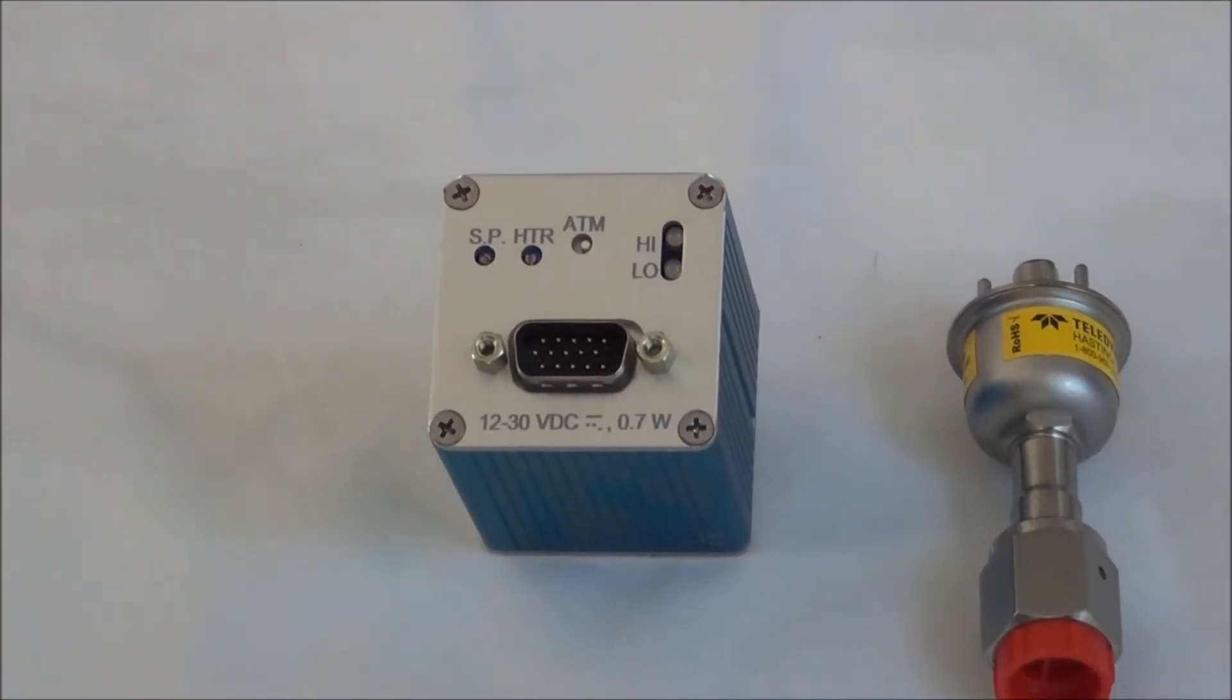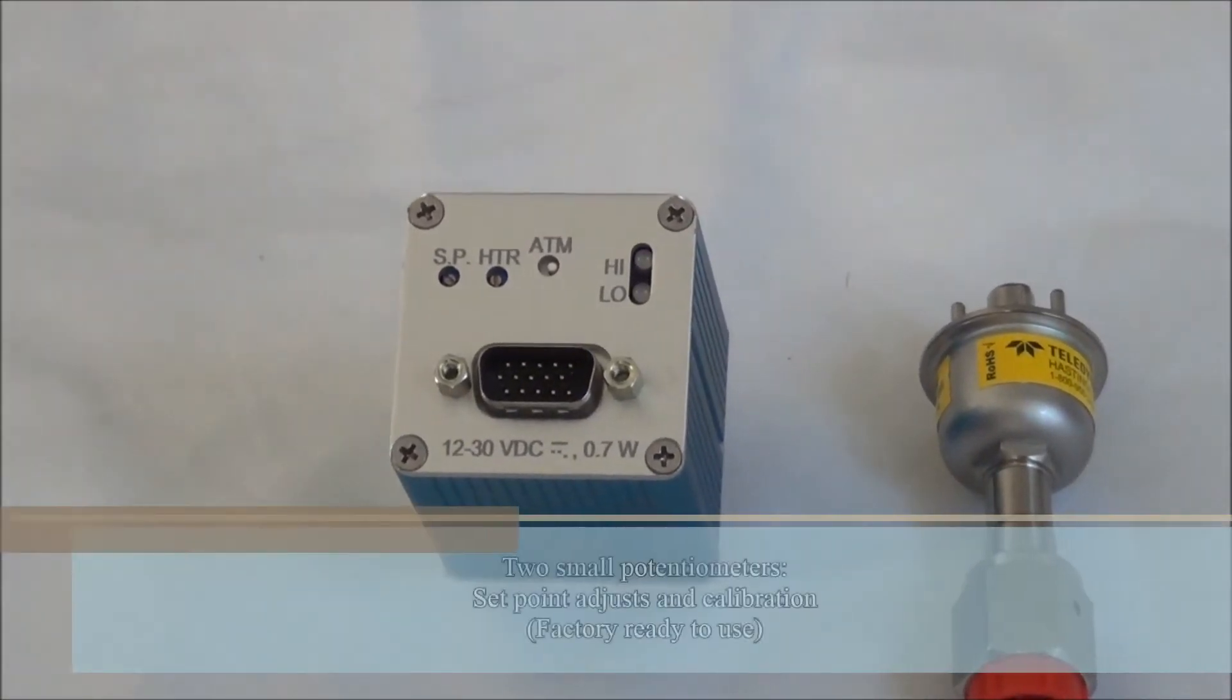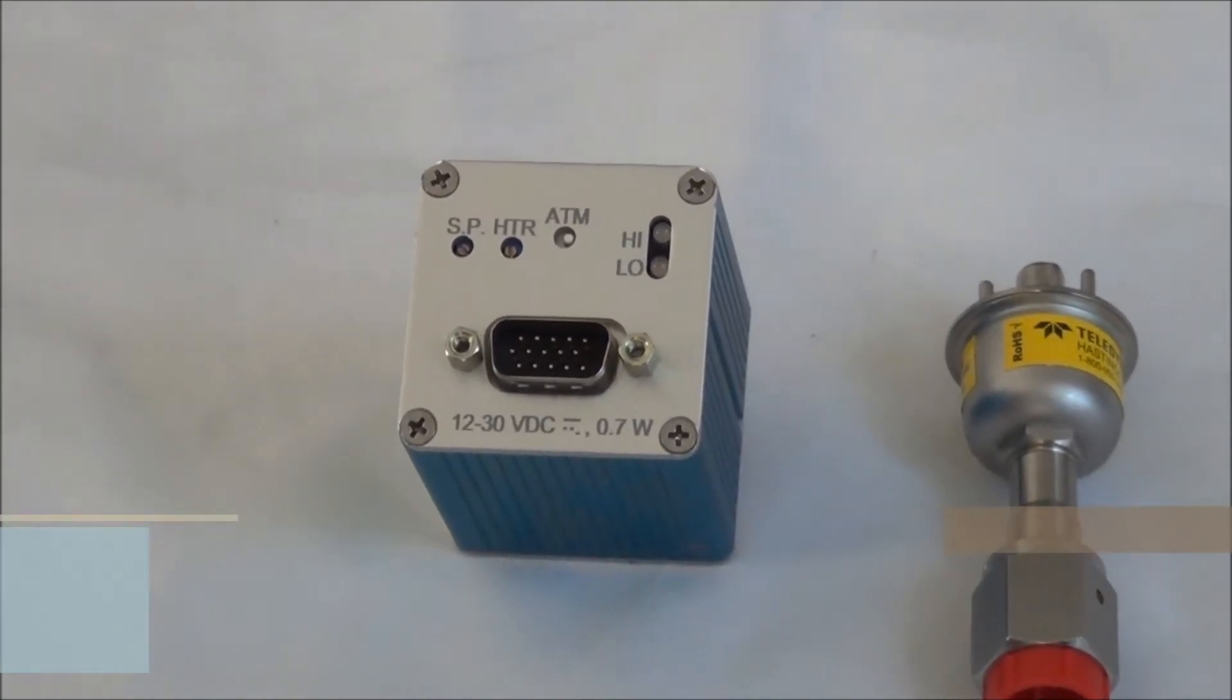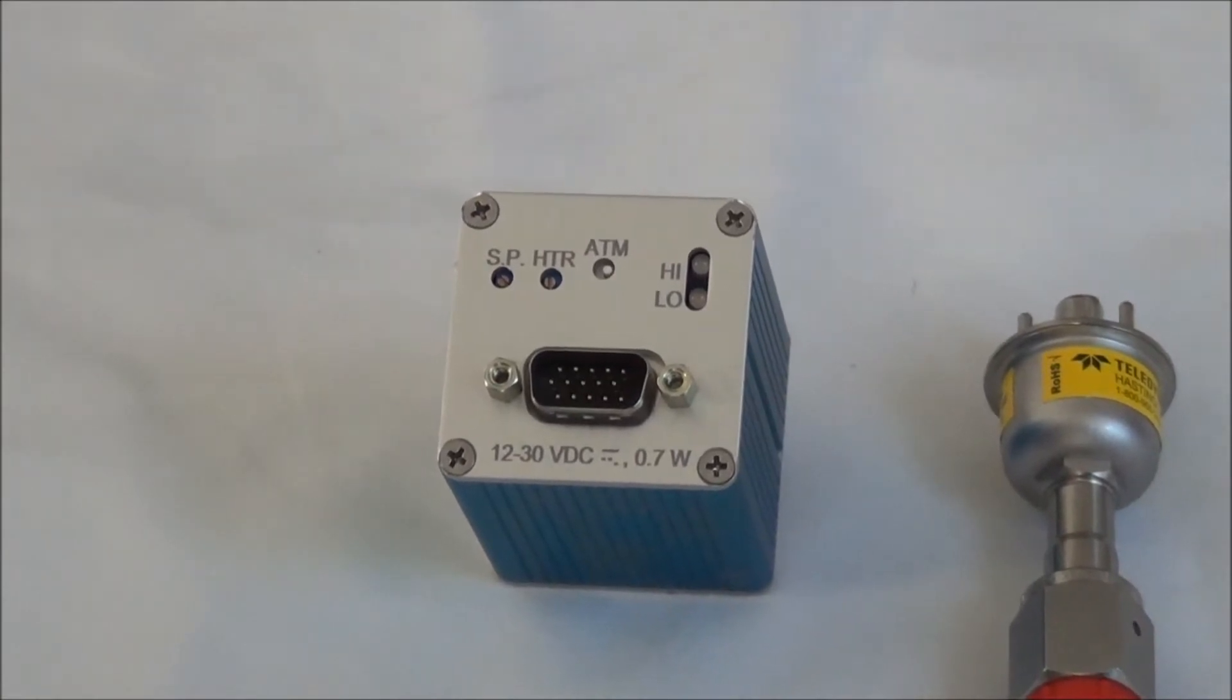There are two small potentiometers. One is for the set point, the other is for calibration. I should mention that the DAVC comes from the factory ready to use. There are no adjustments required out of the box.